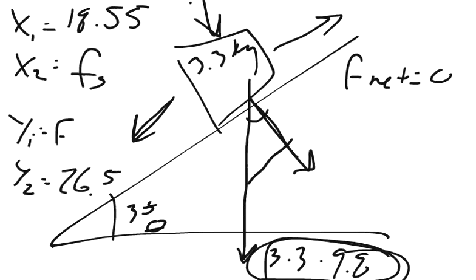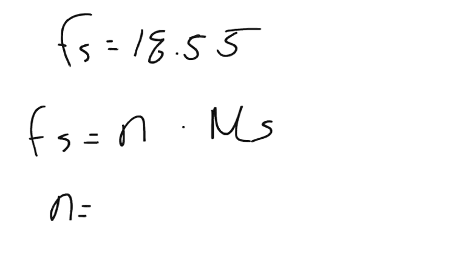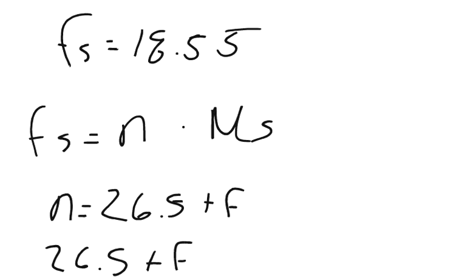Okay, so we have our normal force here is y1 plus y2, 26.5 plus F. So n equals 26.5 plus F. If we throw that into our equation, 26.5 plus F times our coefficient is got to equal 18.55.